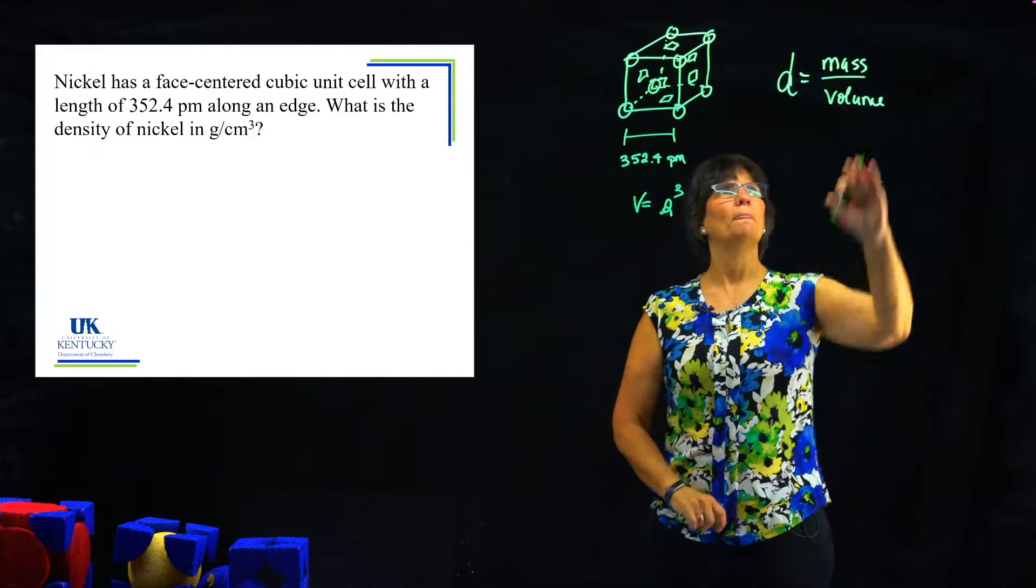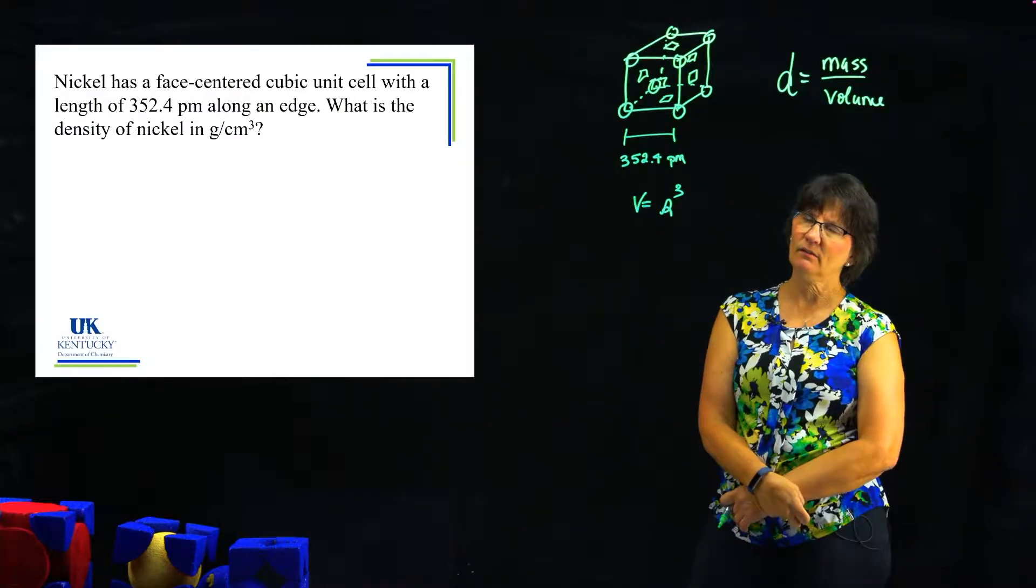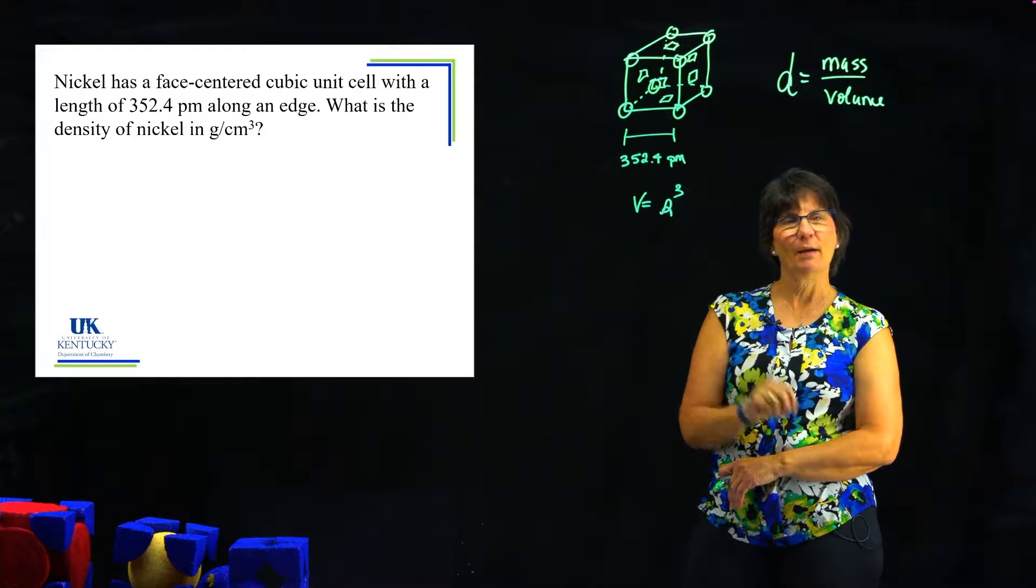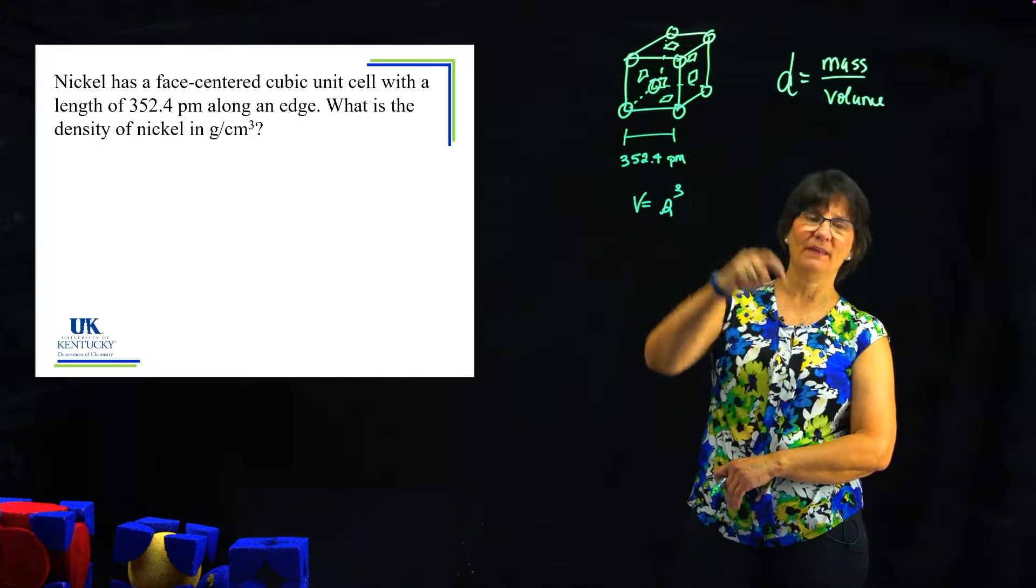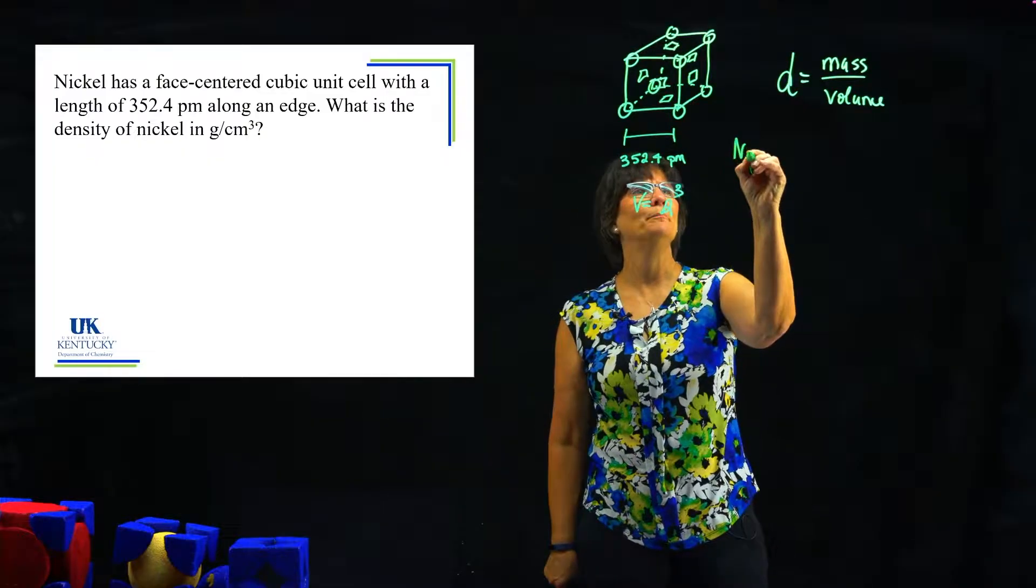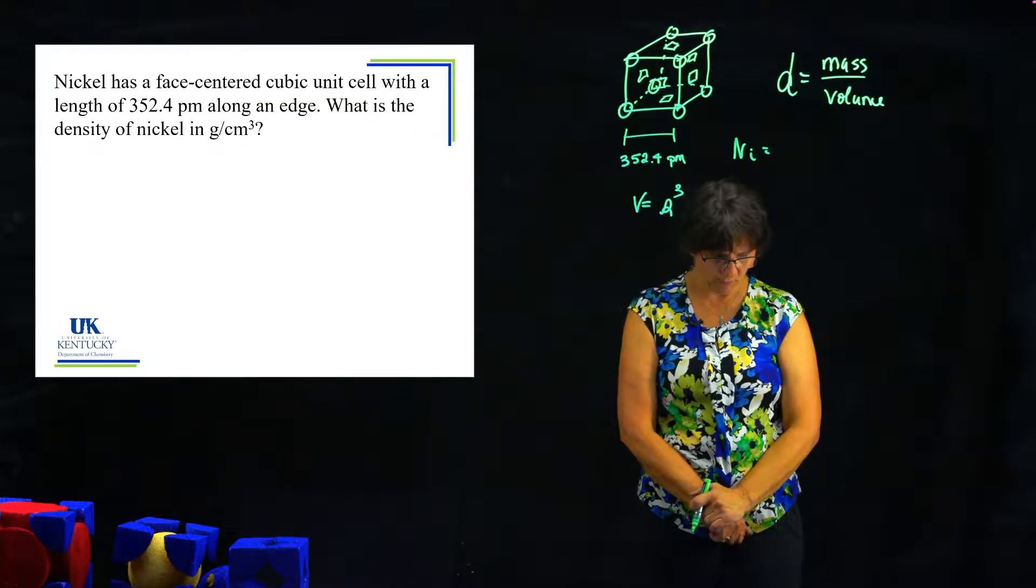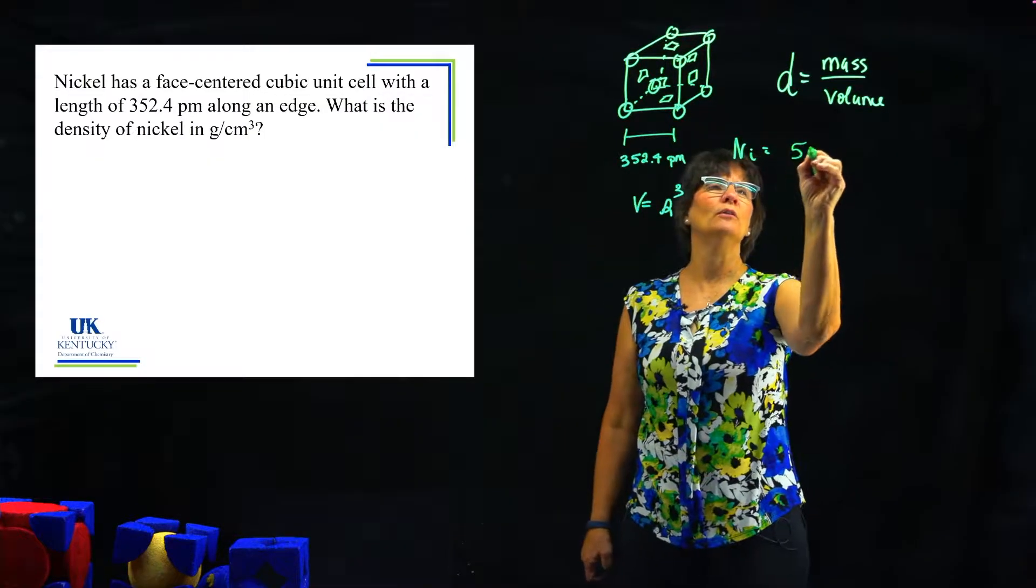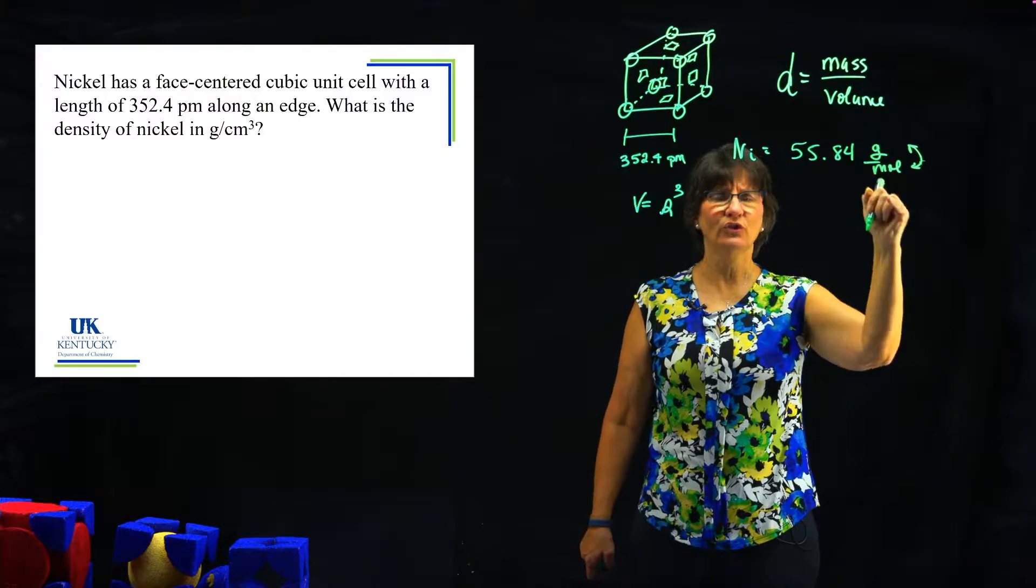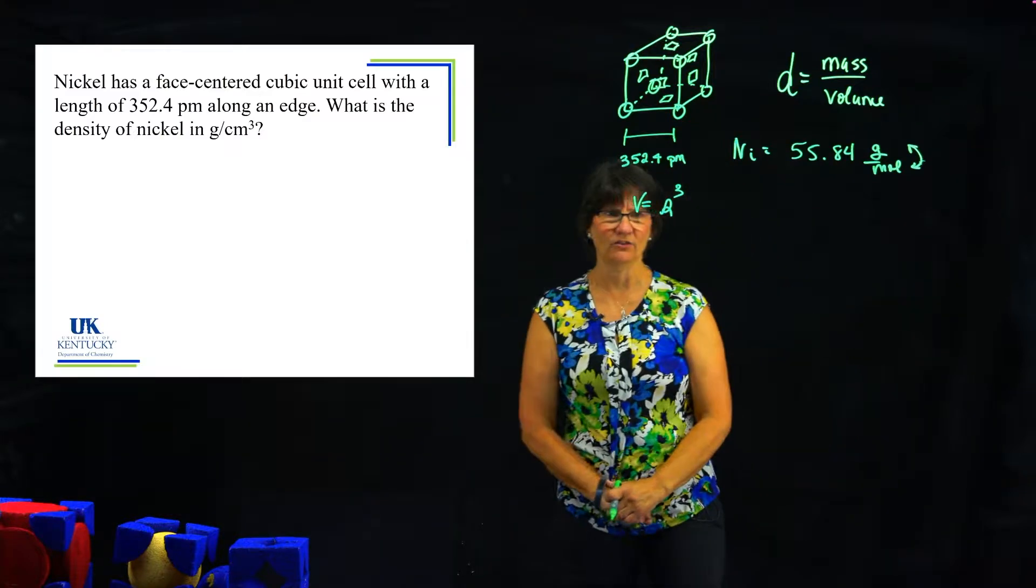Well, if you know an edge length, could you get the volume? Sure, volume is s cubed, side length cubed. So we could get the volume. What about mass? Do you know how many atoms are in that unit cell? If you know how many atoms you have, could you get how many moles that is? If I knew how many moles I had and I knew it was nickel, I have to go to a periodic table for this, but if you look up nickel, you can get the molar mass of nickel, and it's 55.84 grams in a mole.